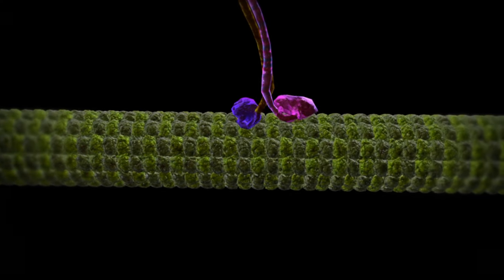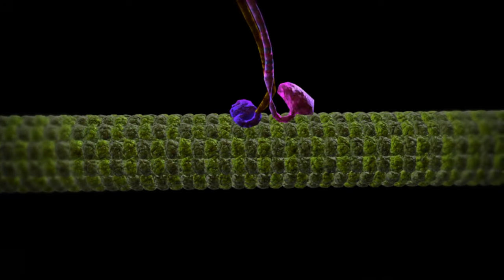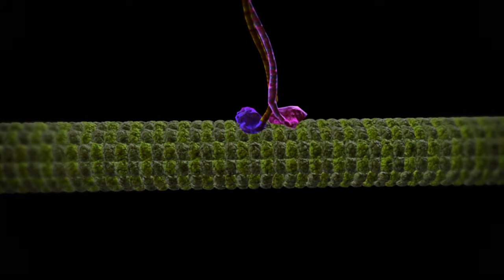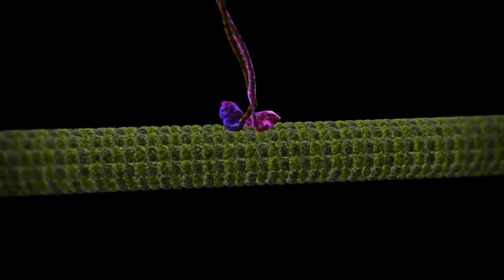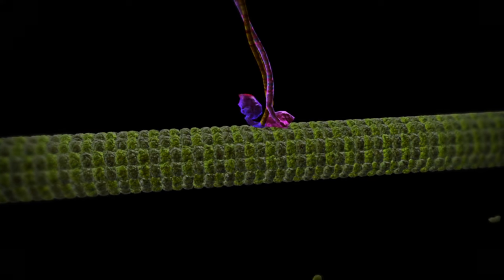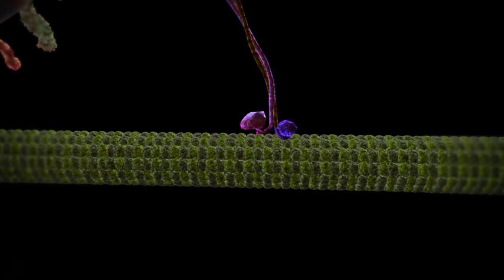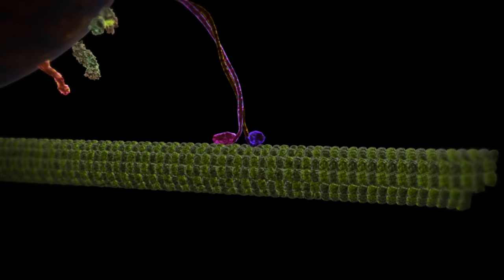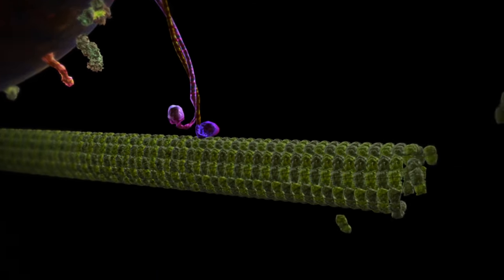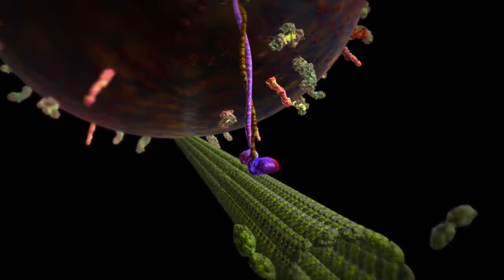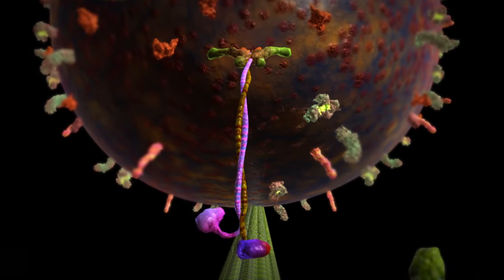Each foot possesses two special locations, called binding sites, that interact with other molecules. One site attaches to the microtubule and the other binds with ATP, the energy molecule of the cell. When one foot binds with ATP and uses its energy, the foot flips over, resulting in the walking motion.